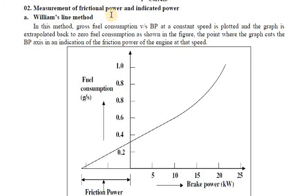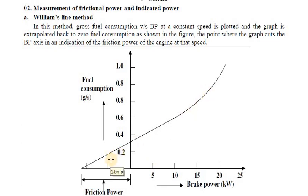To measure friction power or indicated power, different methods are used. The first method is the Williams Line Method, the second is the Morse Test, and the third is the Motoring Test. In the Williams Line Method — named after the person who developed it — a graph is plotted with brake power on the x-axis and fuel consumption on the y-axis.